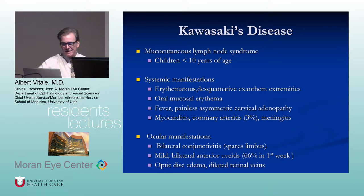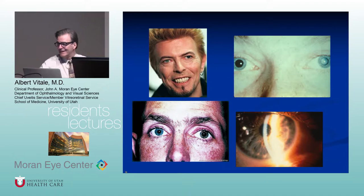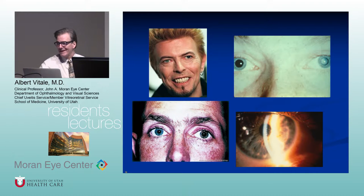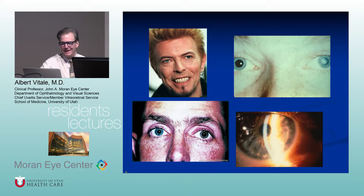Do you know who this is? David Bowie, who died this year. He had heterochromia — a blue right eye and a brown left eye — actually due to trauma when he was young. This leads us to iris heterochromia and Fuchs heterochromic iridocyclitis.